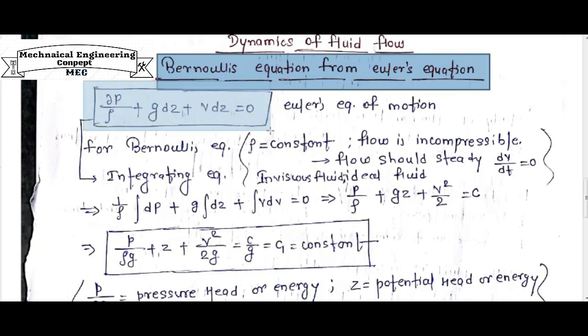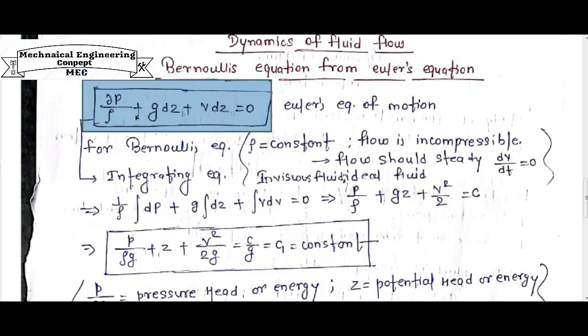As I discussed earlier, in Euler equation of motion, which comes out as del P by rho plus g dz plus v dv is equal to 0, this is the Euler equation of motion.